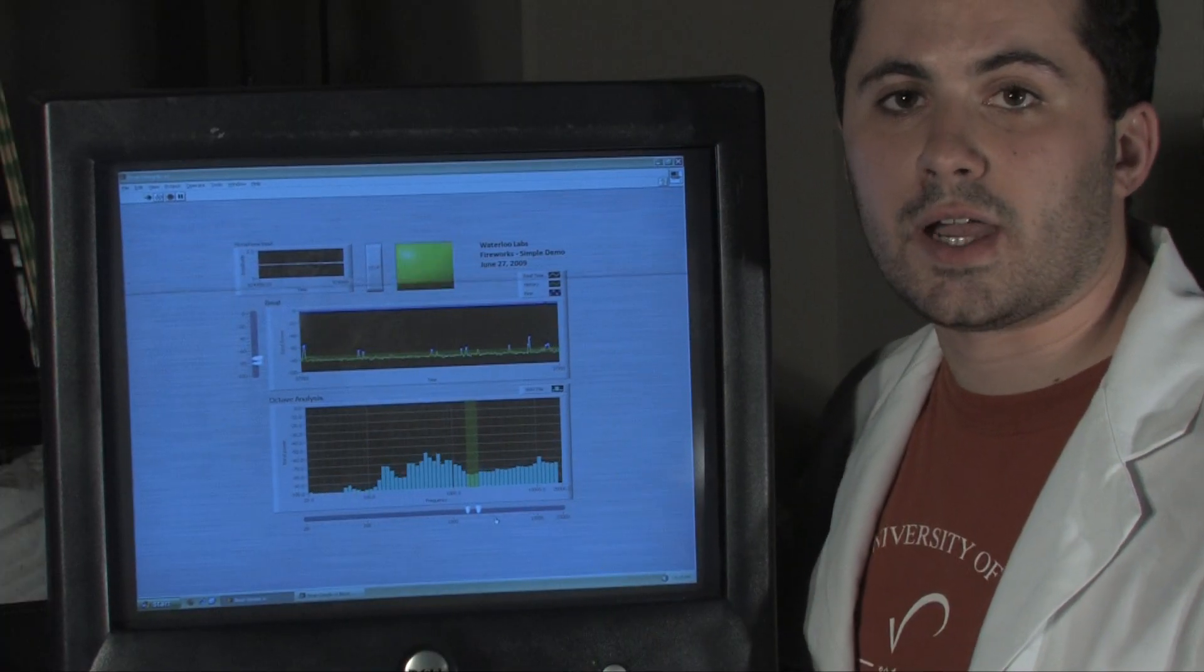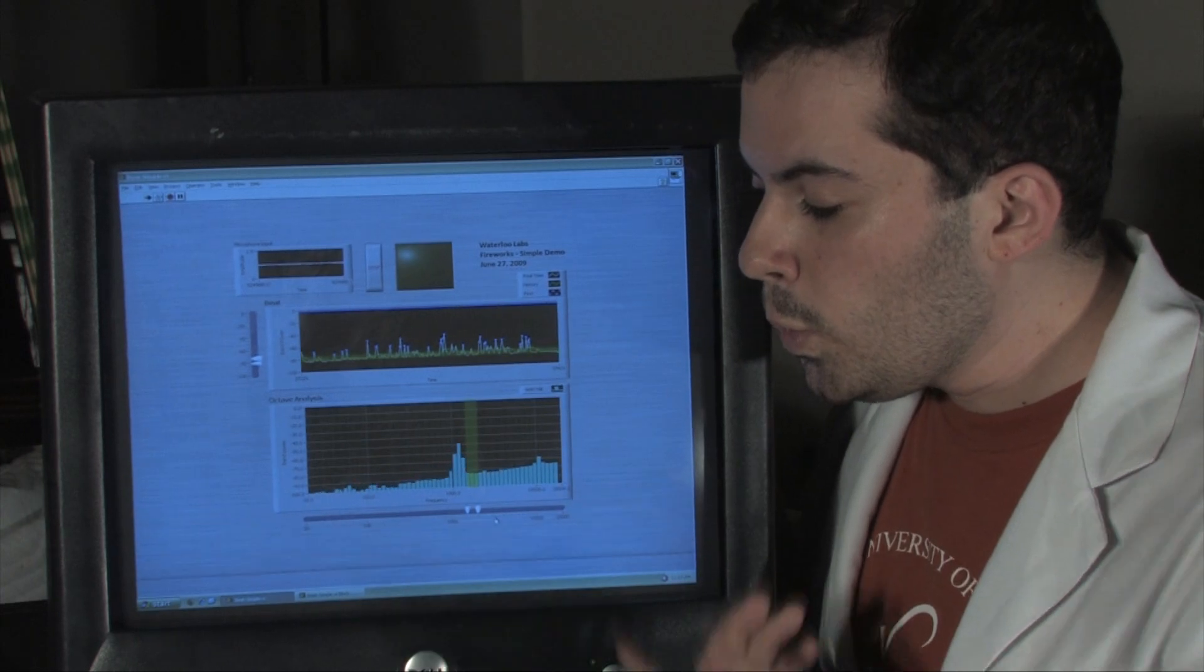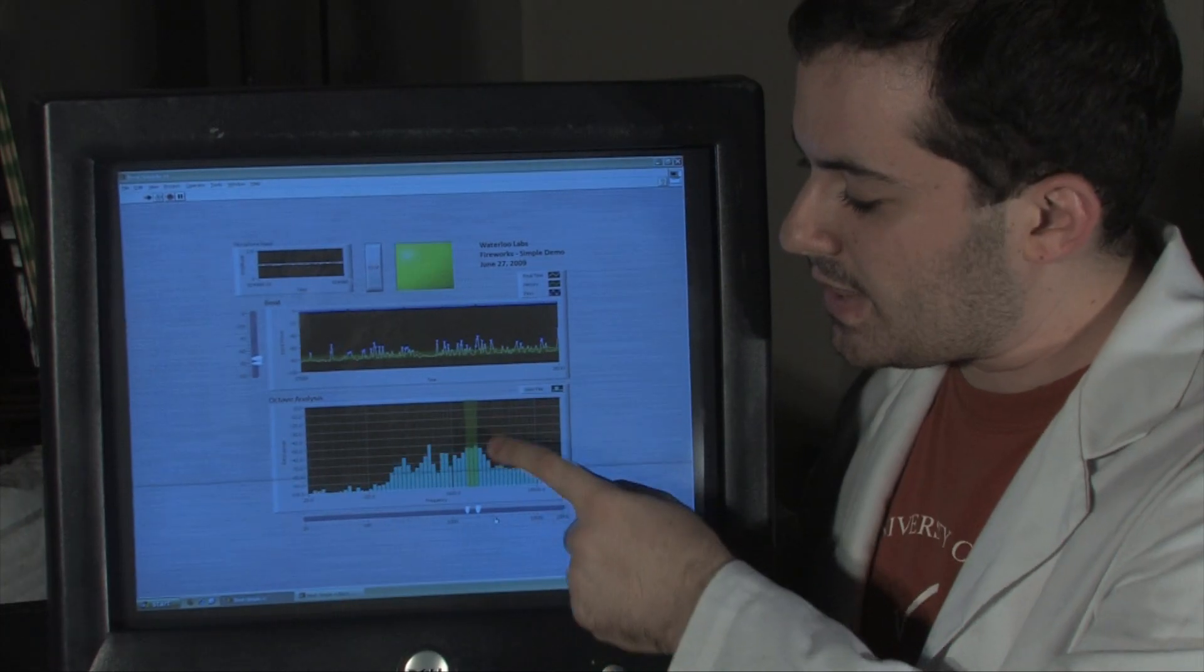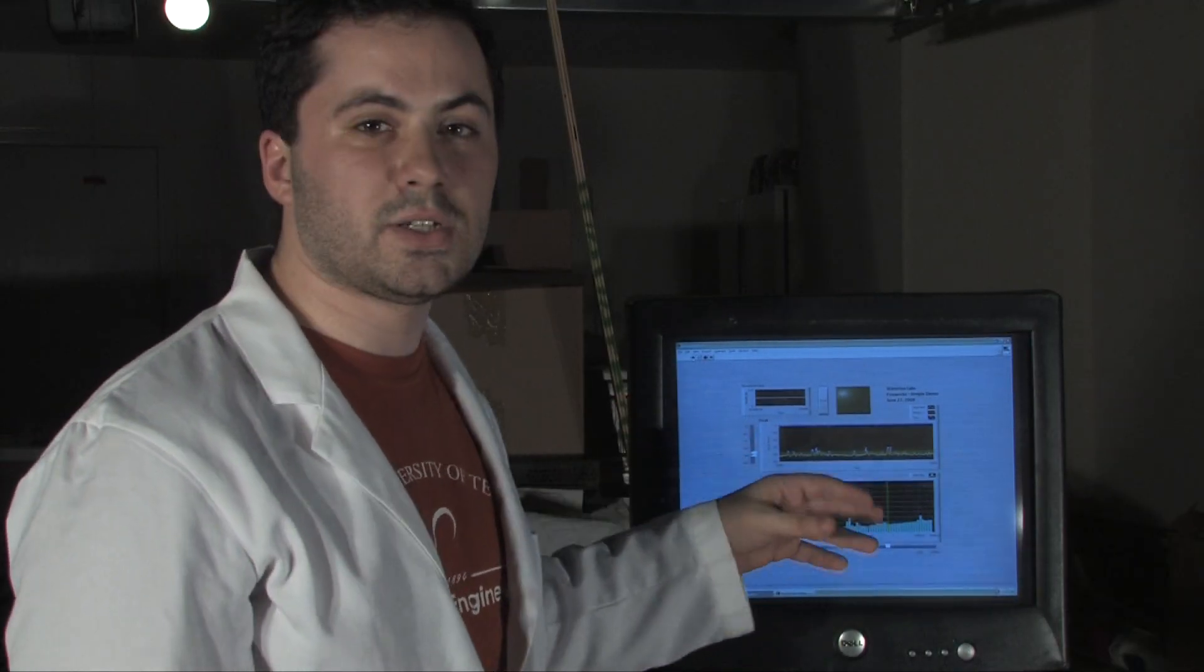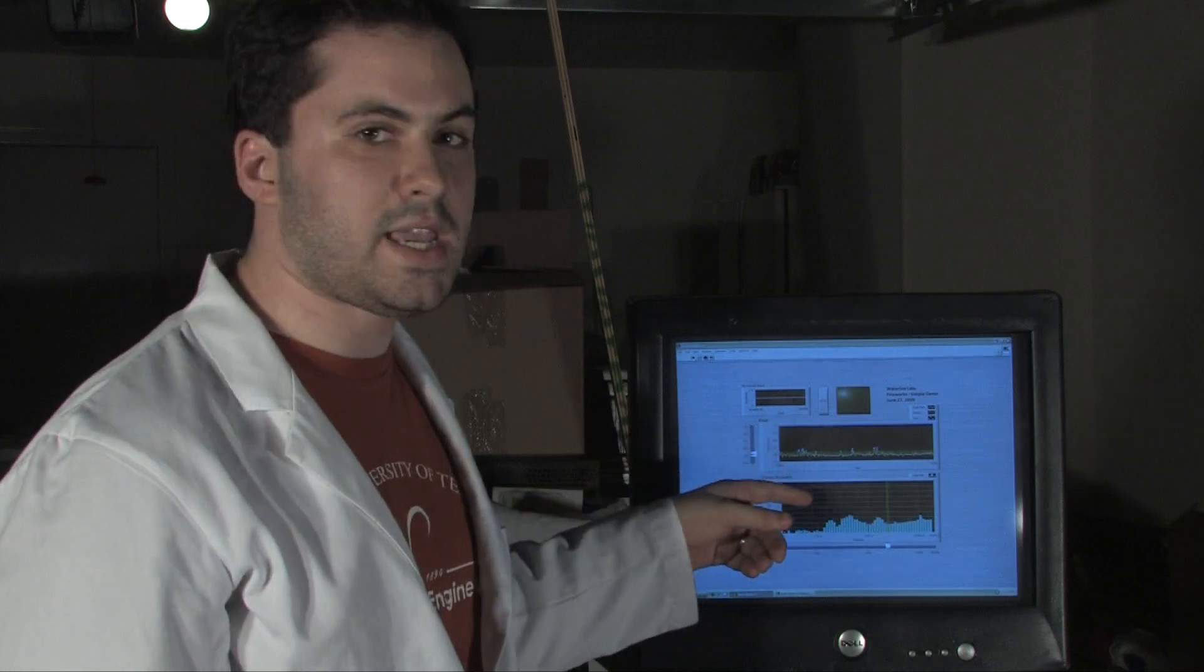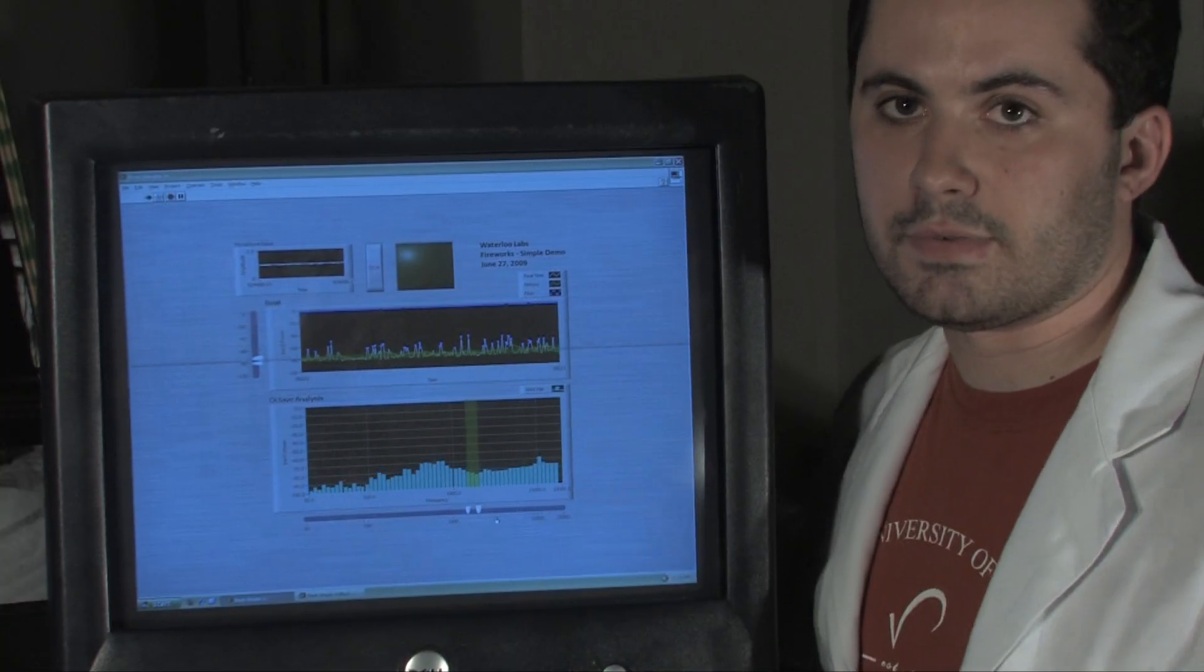So this is the program that we use to control the fireworks. We care about this particular green area that we've marked off. When the level of noise in a certain frequency goes above the ambient level, we trigger a beat. And this LED goes off.